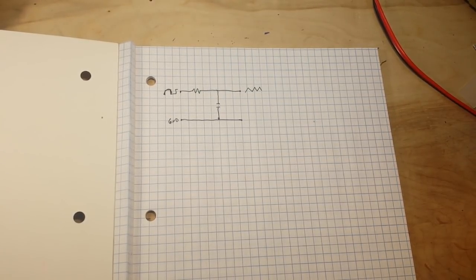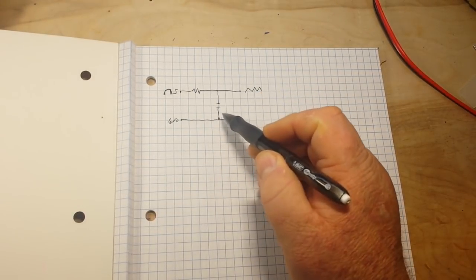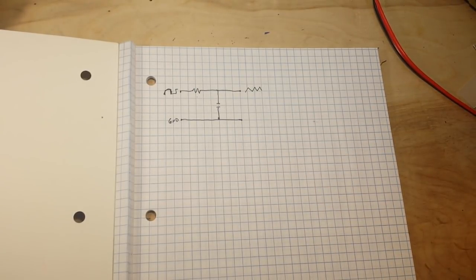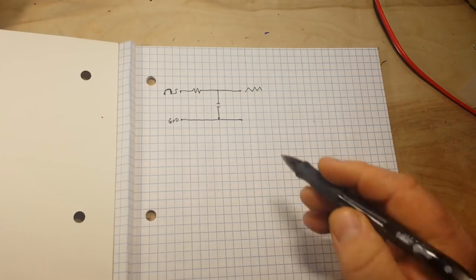Okay. So our integrator circuit is really nothing more than a resistor in series with a capacitor. Pretty simple, right? And at low frequencies, the reactance of the capacitor is high while at high frequencies, the reactance is low and that's due to the capacitive reactance formula.